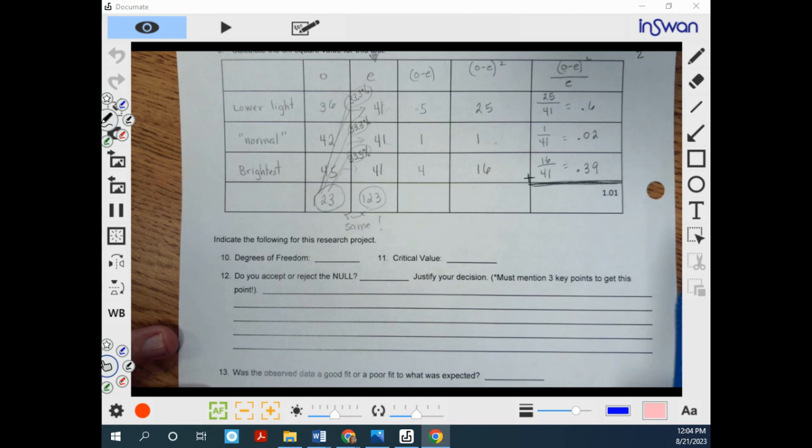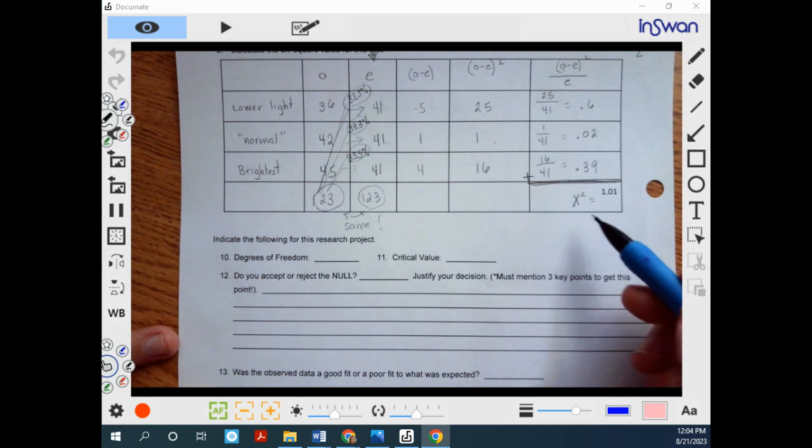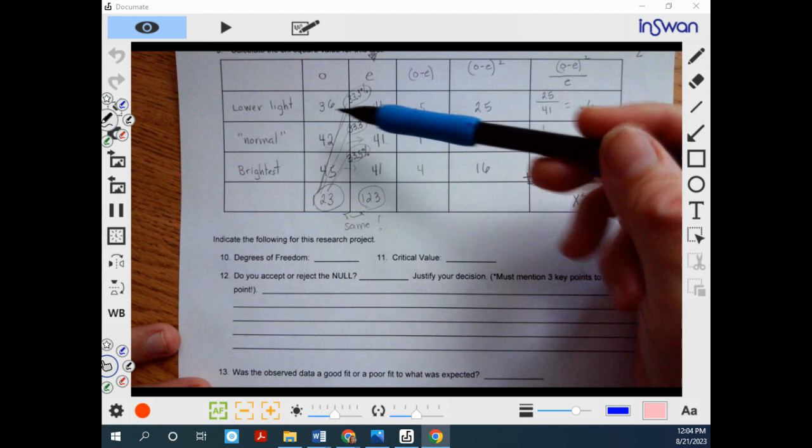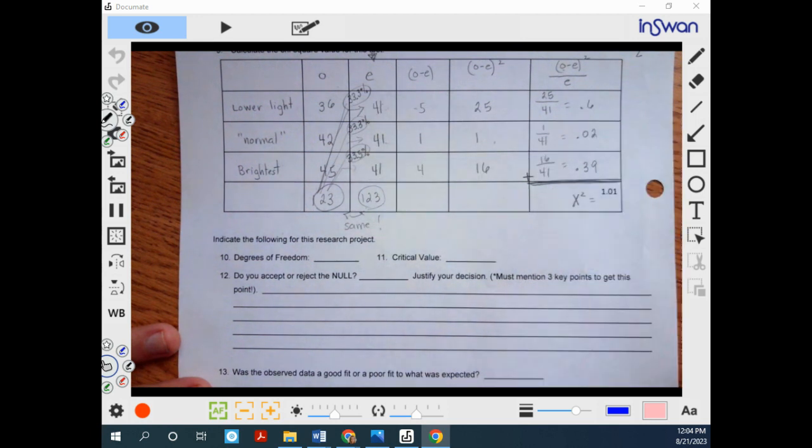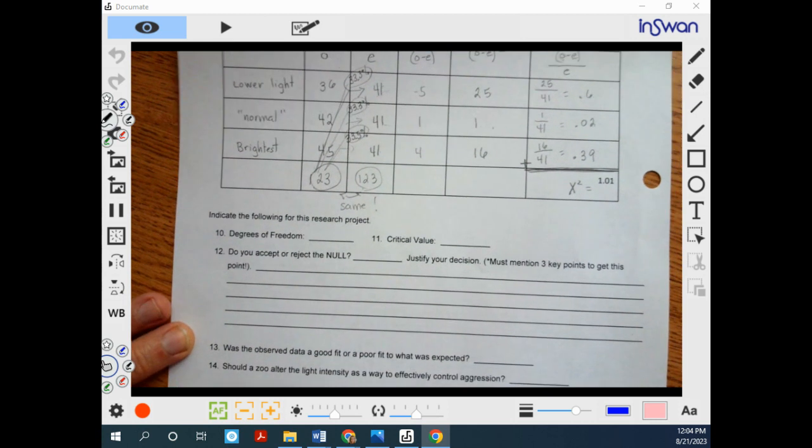And then to answer the rest of these questions, you then have this as your official chi-square value right here. And you're going to use it to help you determine if light is affecting the aggression or if it's not. You should be able to complete the rest using your notes as well.